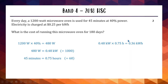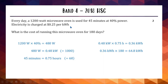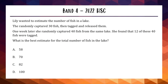We're using this for 180 days, so multiply the daily figure: 0.36 times 180 equals 64.8 total kilowatt hours. Each kilowatt hour costs 25 cents, so we multiply 64.8 by 0.25, giving us $16.20. If you got $16.20, that earns you three marks for this Band 4 question from the 2018 HSC paper.